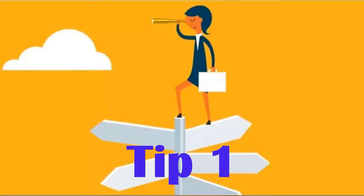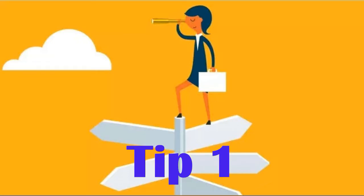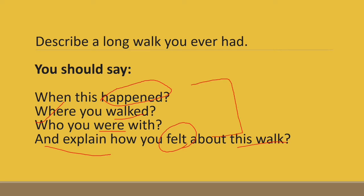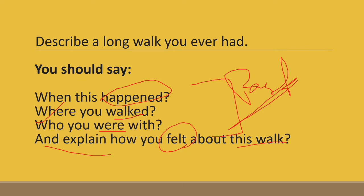My first tip is to read the question very carefully, because from the question you can identify the tenses you need to use in your answer. For example, check the verb forms in the bullet points: 'happened' is second form, 'walked', 'were', and 'felt' — felt is also second form. These forms tell you the tenses needed. Since all these forms are past tense, your answer should also be in the past tense.